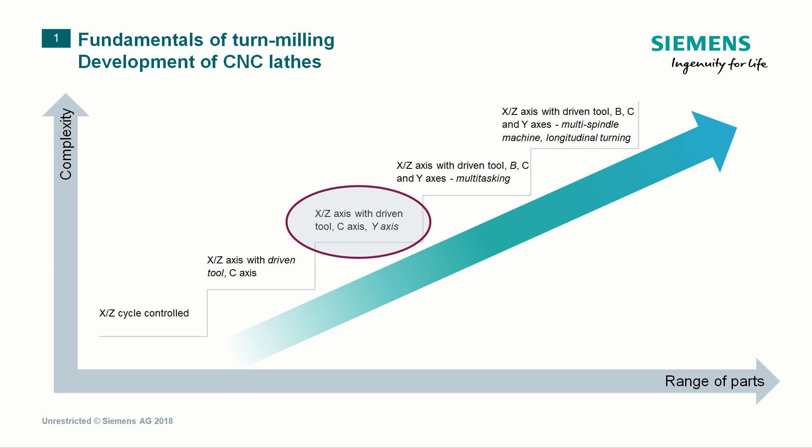Right through to machines with a B axis, known as multiple spindle machines, or beyond these, to Swiss-type automatic lathes.